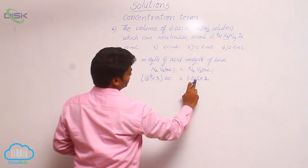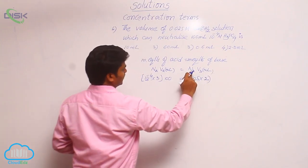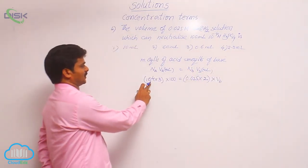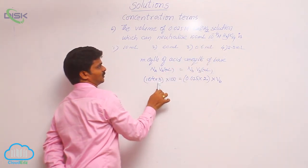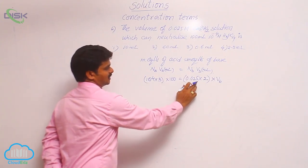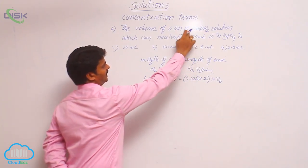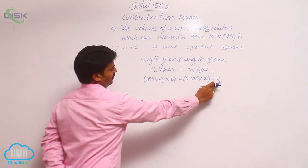0.025 is molarity into its n factor. The total term gives normality of base. 10 power minus 3 is the molarity of acid into its n factor gives normality, its volume here. Similarly, for base, molarity is given 0.025 into its n factor 2, volume of base.